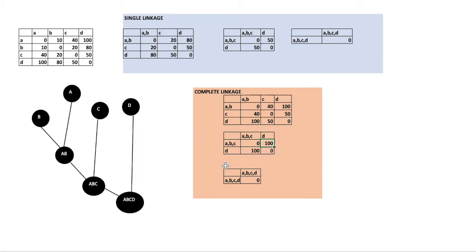Then we merge them again until it becomes one cluster. In the dendrogram it will look the same: A and B merge into AB, AB merges with C to become ABC, and ABC merges with D to become ABCD. That is how single linkage and complete linkage are used to measure the distance between each cluster in hierarchical clustering. Thank you for watching.